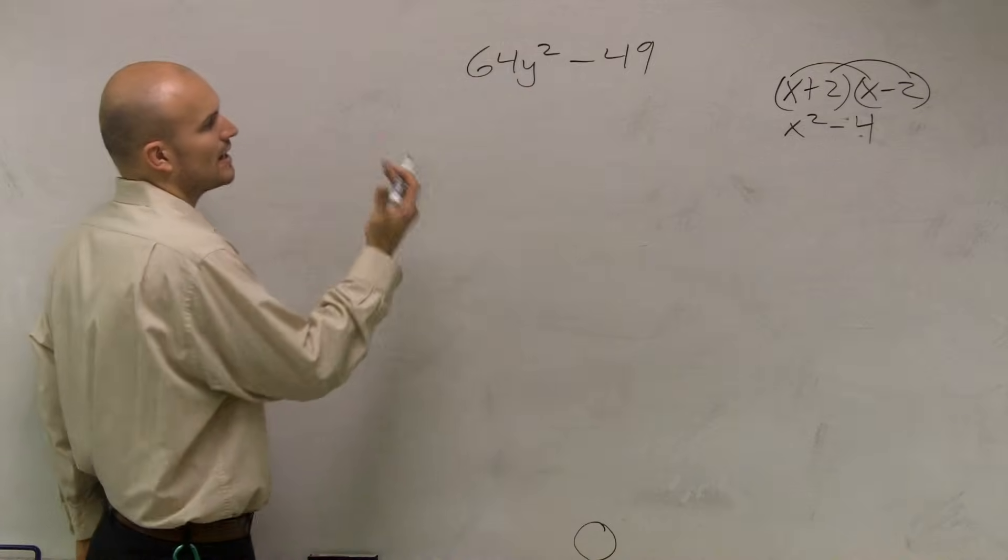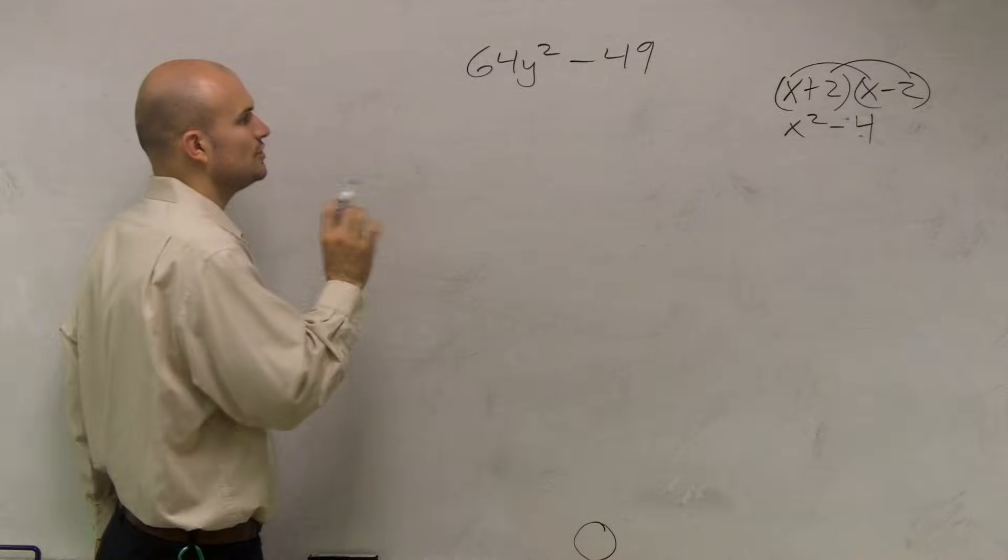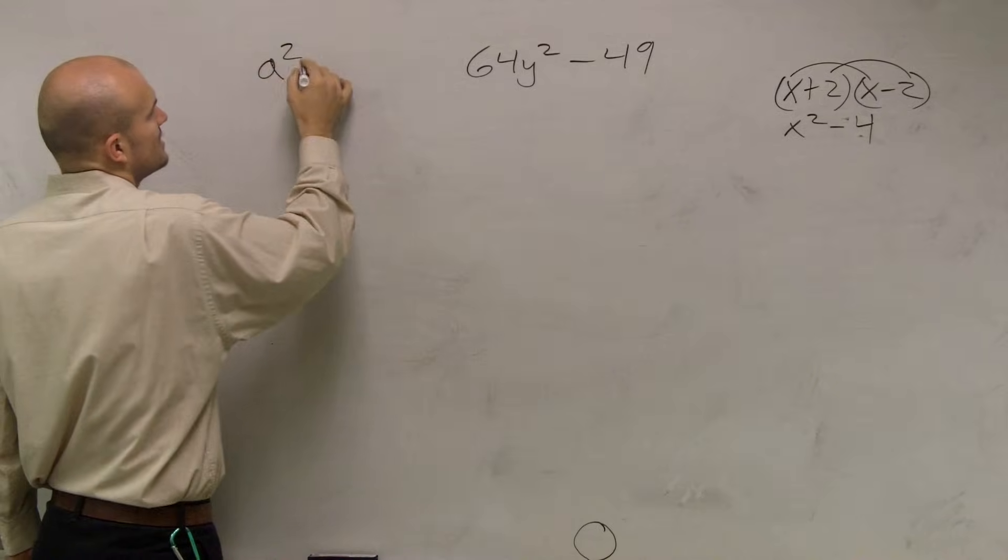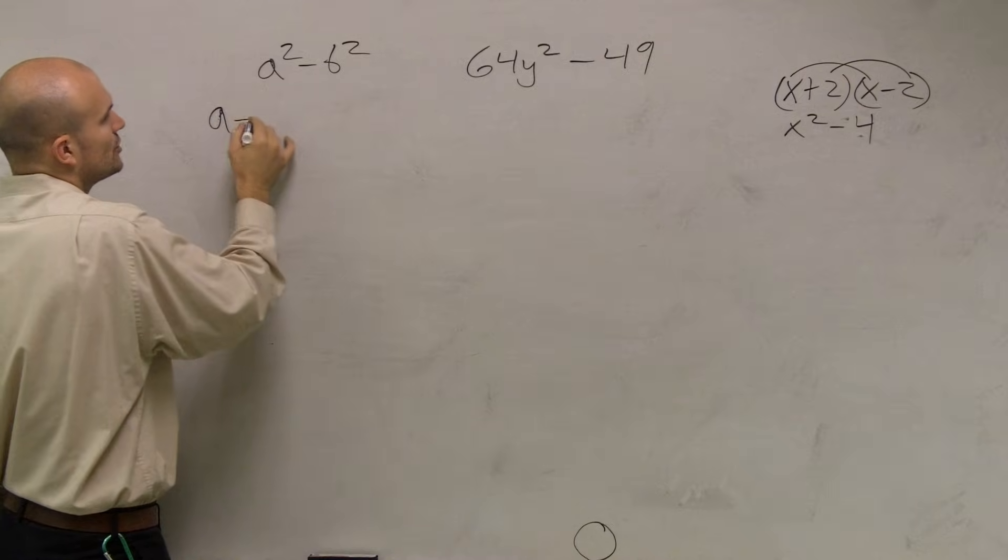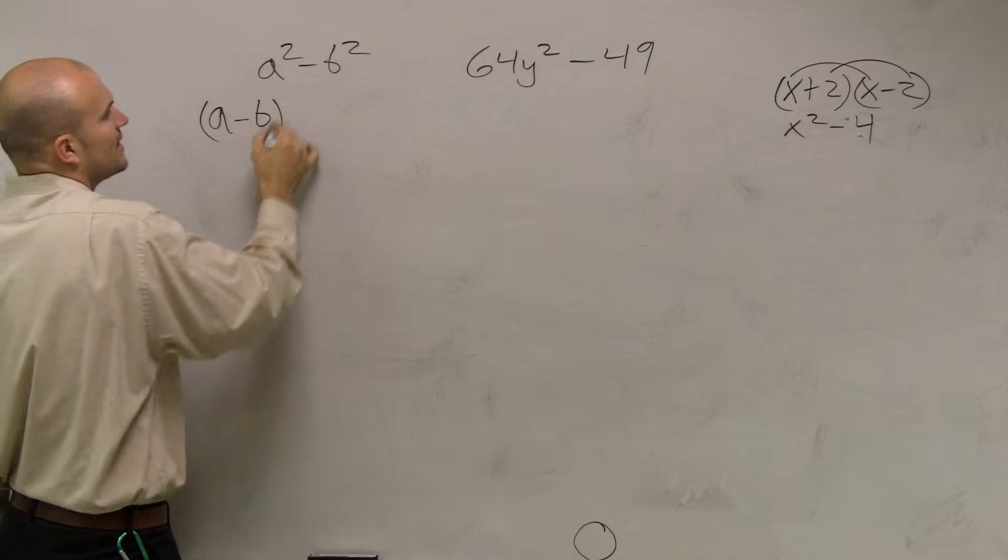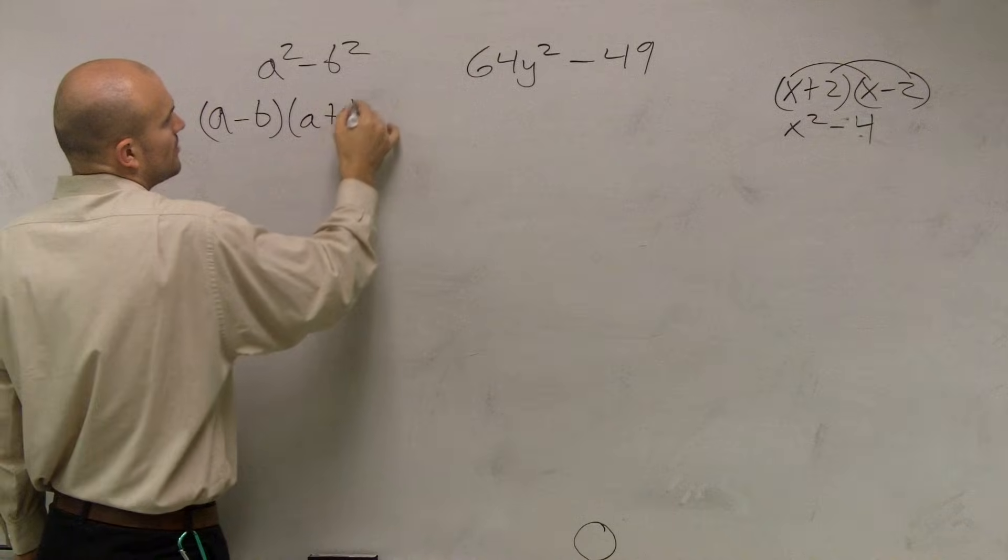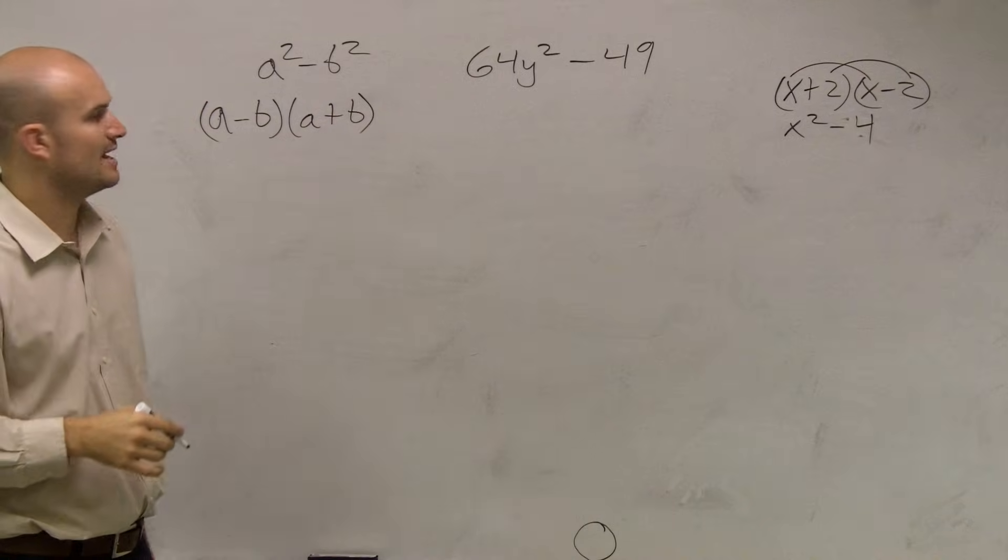However, how can I rewrite this? Well, you can use the difference of two squares. The difference of two squares says if you have a number squared minus another number squared, you can write that as the product of two binomials in the form of a minus b and a plus b.